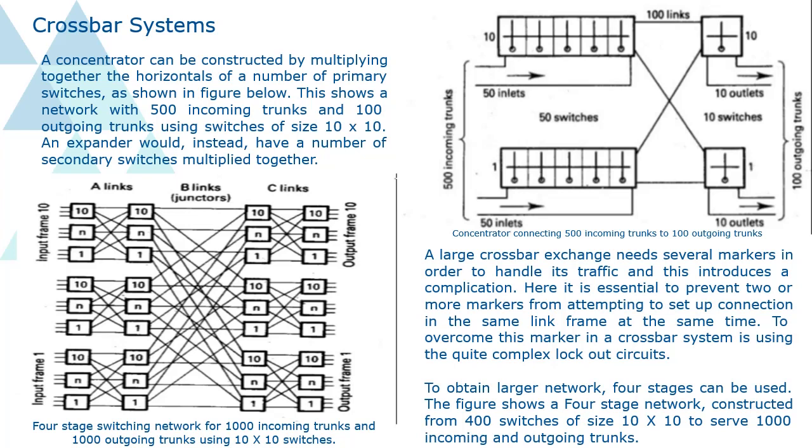A large crossbar exchange needs several markers in order to handle its traffic and this introduces a complication. Here it is essential to prevent two or more markers from attempting to set up connection in the same link frame at the same time. To overcome this marker in a crossbar system is using the quite complex lockout circuits.